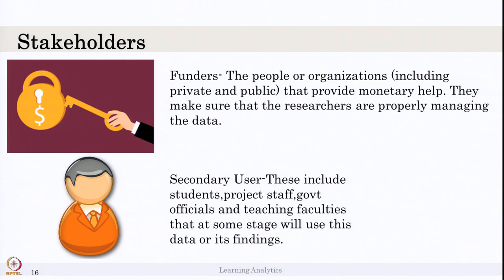Secondary users — such as readers of your published research paper, institute staff, or government officials receiving your report — do not have access to all the data you collected. They only need to know the abstract-level analysis, what data was collected, and the inferences drawn. You should be careful about what data is given to secondary users, and especially do not share any user-related personal information with them.